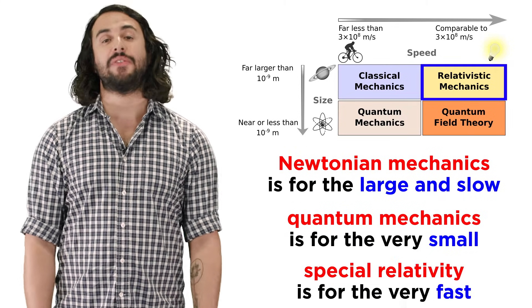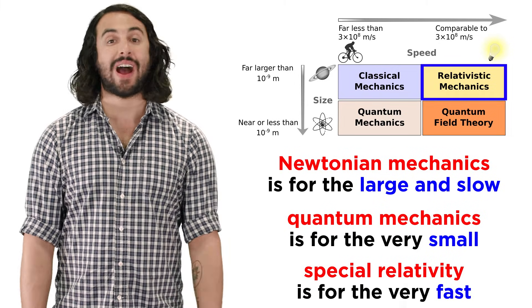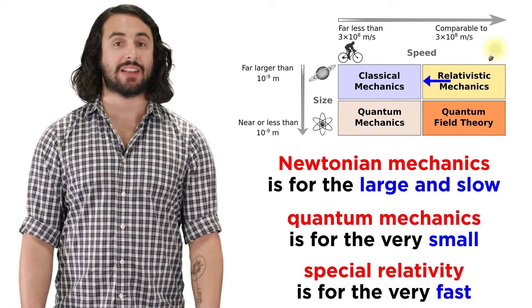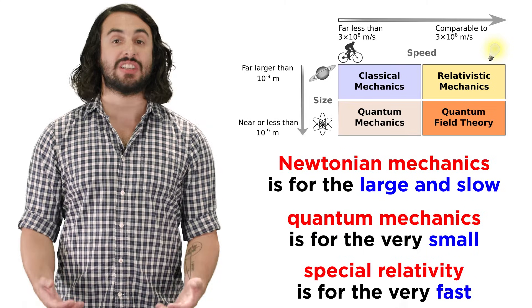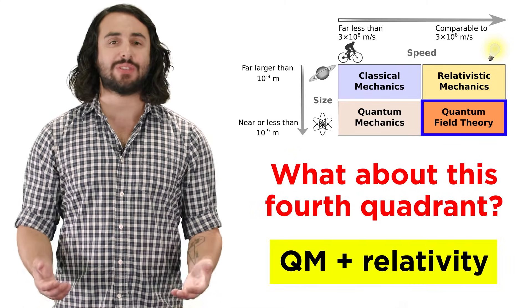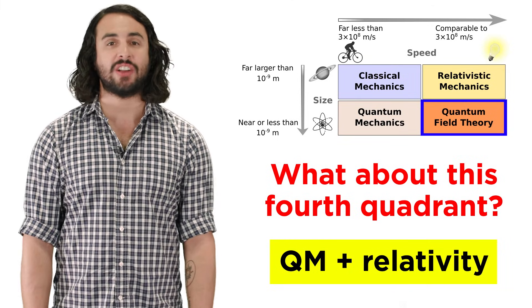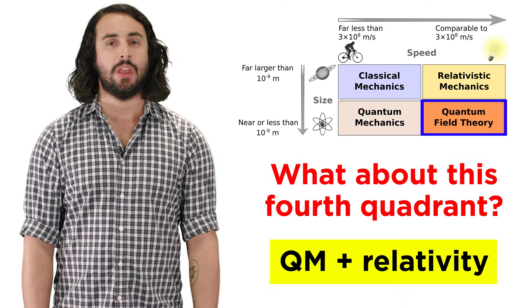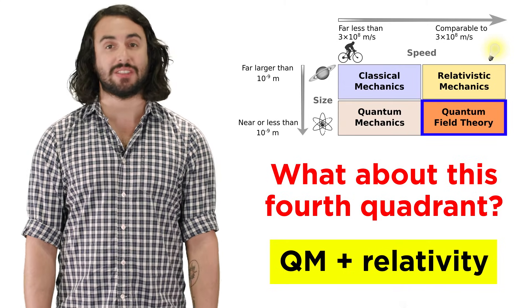In the realm of the very fast, special relativity proved to be an adequate description, while again, Newtonian mechanics emerge as velocities slow down enough that relativistic effects become negligible. But that leaves this fourth quadrant, which requires some marriage of quantum mechanics and relativity. This is perplexing territory, and it contains the current frontier of physics.